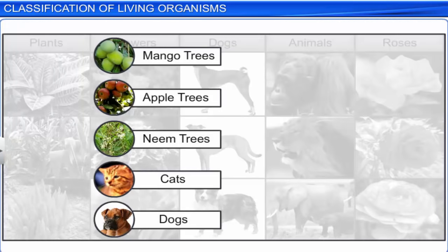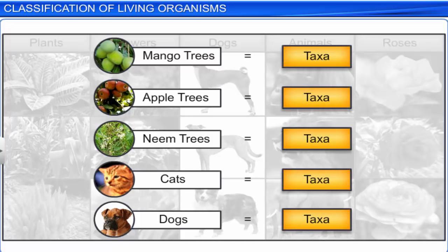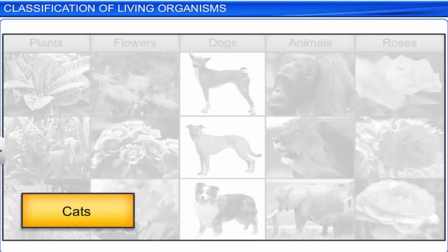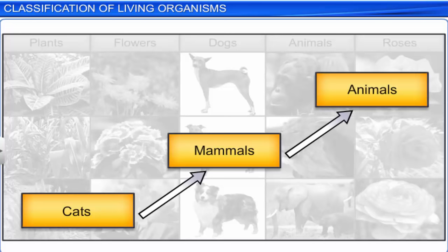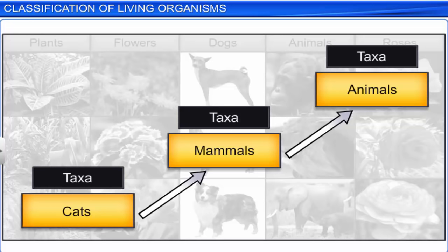The scientific term given for these categories is taxa. Each of the groups, namely mango trees, apple trees, neem trees, cats and dogs, are all taxa. However, cat is a mammal, and all mammals come under animals. Therefore, a cat, mammals, and animals represent taxa at different levels.